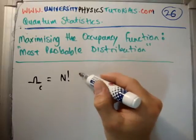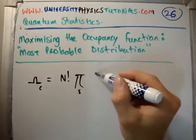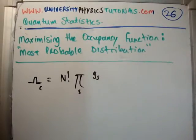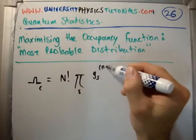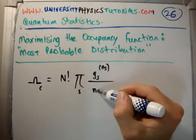We had capital N factorial. We had the multiplication of states over s. We had the density of states, the discrete density of states, the number of particles per state, and then n sub s factorial like that.